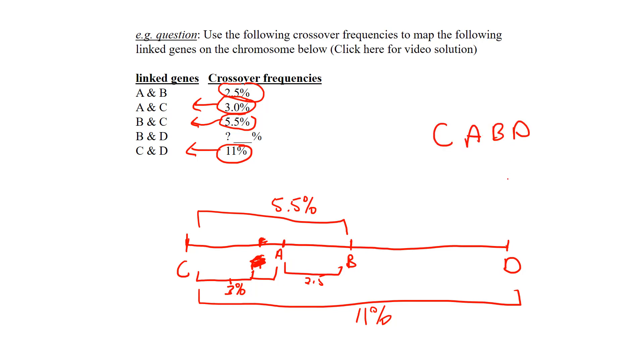Or if you mapped them the other way, it could be the reverse of this: D, B, A, C. But that is the sequence. There's always two answers when they're asking for sequence, depending on which way you started mapping it.